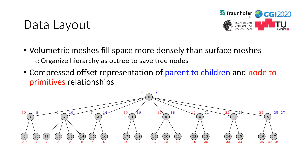Furthermore, we observe that volumetric meshes fill space more densely than surface meshes. For this reason, we organize the hierarchy as an octree to save tree nodes. In addition, we use a compressed offset representation of parent-to-children and node-to-primitive relationships.